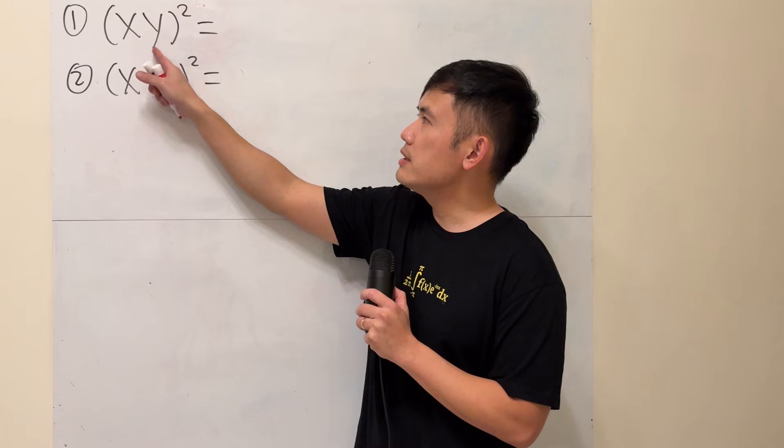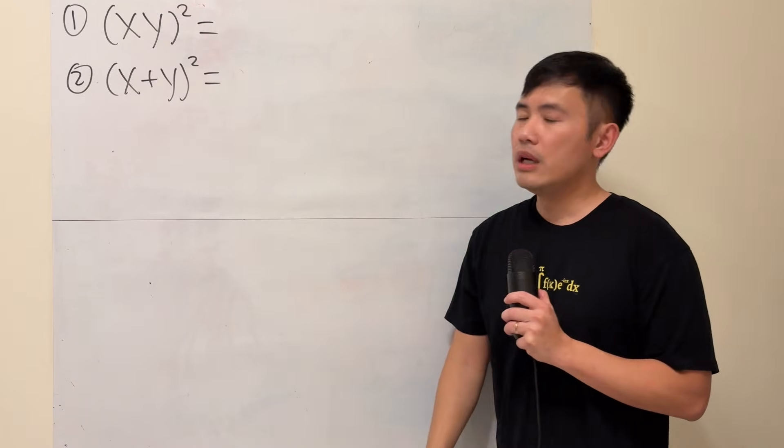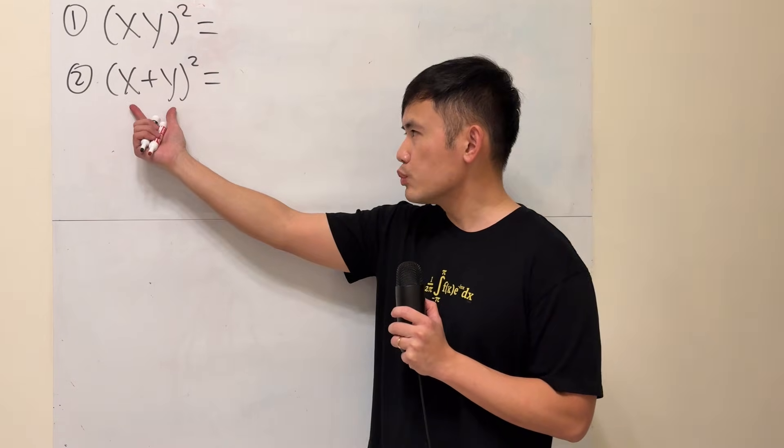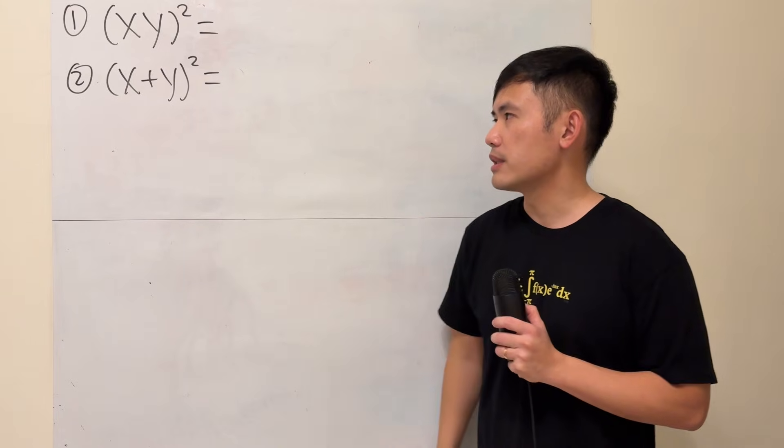First, we have xy in the parentheses and then raised to the second power. And the second one is we have x plus y instead, and then still raised to the second power.